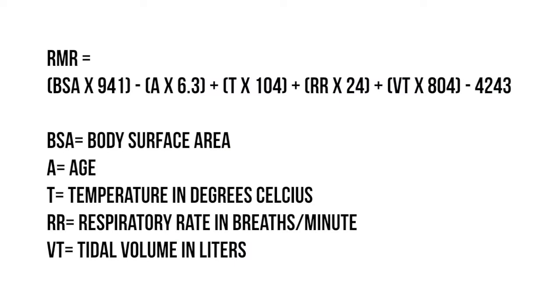The third predictive equation for critically ill individuals is the Swinamer equation. The Swinamer equation is a little more complex than the last two equations. It looks at BSA, or body surface area, in meters squared; age in years; body temperature in degrees Celsius; RR, the respiratory rate in breaths per minute, which is found on the ventilator; and VT, the tidal volume in liters, which is also found on the ventilator. If you don't know how to find the tidal volume or the respiratory rate, this is where collaboration comes in — the respiratory therapist can help you find those values.